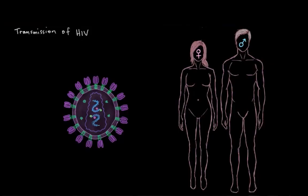We know a little bit about HIV. It's a virus that attacks your immune system, and if untreated, it will cause a state of immune failure, immune deficiency in a person. That immune deficiency state is referred to as AIDS. It's essentially the late stage of an untreated HIV infection.